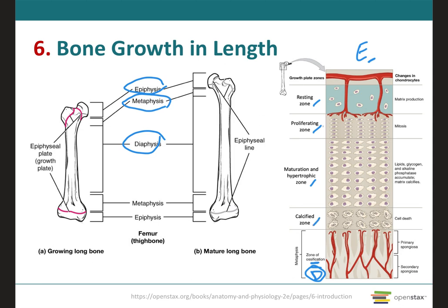The zone of resting cartilage is nearest to the epiphysis and consists of small, scattered chondrocytes. The term resting is used because these cells do not function in bone growth, but rather anchor the epiphyseal plate to the epiphysis of the bone.